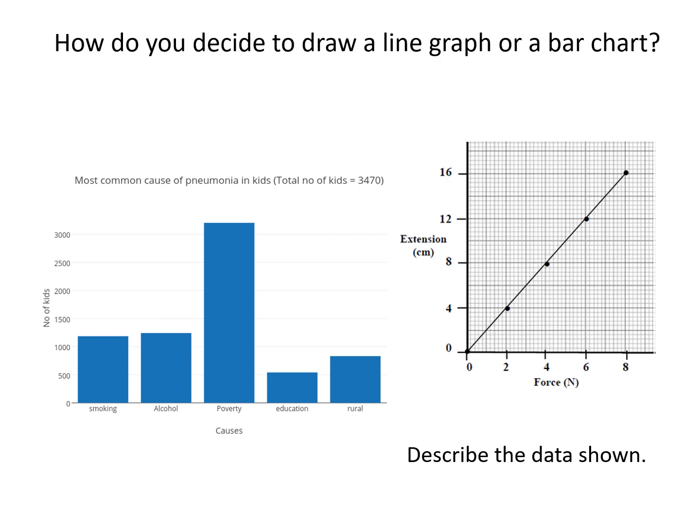Here it says describe the data shown. Looking at the bar graph, I can identify different points and say poverty has the highest bar at about 3,250, while education is the least. For the force and extension graph, there's a linear relationship - directly proportional - so as force increases, extension also increases. You can use values to make comments. For example, when force is four newtons, the extension is eight centimeters.